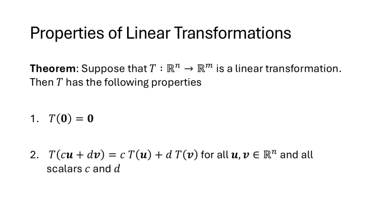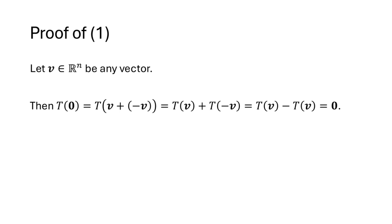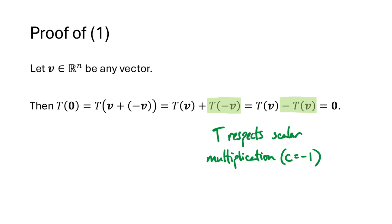Linear transformations have some nice properties. If T respects vector addition and scalar multiplication, then: T of the zero vector must equal the zero vector, and T(cu + dv) = c·T(u) + d·T(v). That second property means T respects linear combinations. The proof that T(0) = 0 uses T(v + (−v)) = T(v) + T(−v) by respecting addition, then T(−v) = −T(v) by respecting scalar multiplication with scalar −1, so T(v) − T(v) = 0.